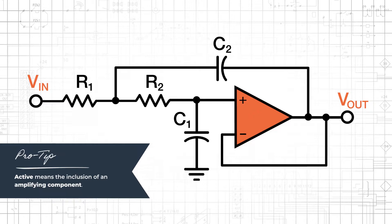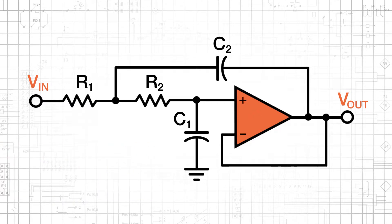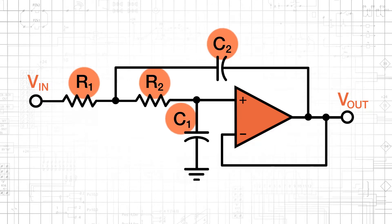A detailed analysis of the Sallen-Key low-pass filter is not particularly straightforward. Nevertheless, we can acquire a general understanding of the circuit's operation by performing non-mathematical analysis. Notice that the passive components resemble a typical second-order RC low-pass filter. The only difference is that C2, instead of creating a high-frequency path to ground, creates a high-frequency path for positive feedback.